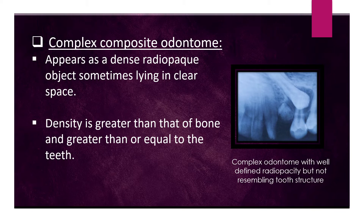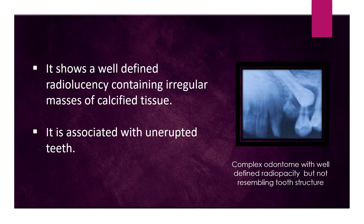Complex composite odontoma appears as a dense radiopaque object sometimes lying in a clear space. Density is greater than that of bone and greater than or equal to that of teeth. It shows a well-defined radiolucency containing irregular masses of calcified tissue and is associated with unerupted teeth.